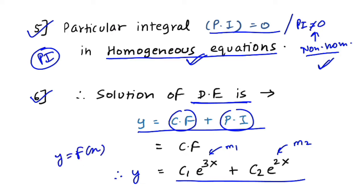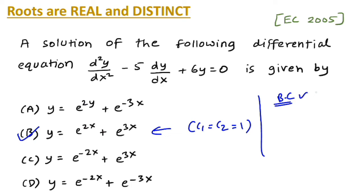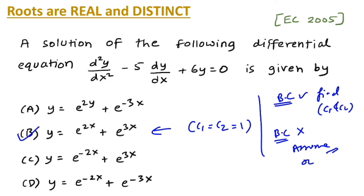The answer is in the form y = f(x), but in the options c₁ and c₂ are not present. We assume c₁ = c₂ = 1, and this matches option B. If boundary conditions are given, you must solve for c₁ and c₂; if not, you can assume them equal to 1 or leave the answer in terms of c₁ and c₂, depending on the options provided.